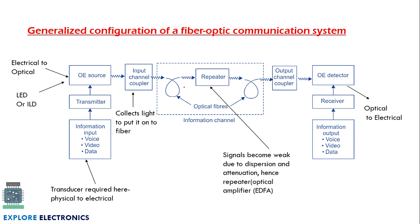Here you can see the optical fiber — we can also have a bent optical fiber. In between, if the optical fiber is a lengthy one, we can use repeaters. A repeater is a device used when the signal becomes weak due to dispersion and attenuation; the repeater is going to strengthen the signal. The optical amplifier used in the repeater is called EDFA. Then we have the optical fiber again, connected to the output channel coupler at the receiver end.